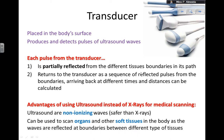An advantage of using ultrasounds instead of X-rays for medical scanning is that ultrasounds are non-ionizing waves, so they are safer than X-rays. They can be used to scan organs and other soft tissues in the body, as the waves are reflected at boundaries between different types of tissues. Some organs are more sensitive than others, so you definitely don't want to take an X-ray when an alternative method can give you the same answer.